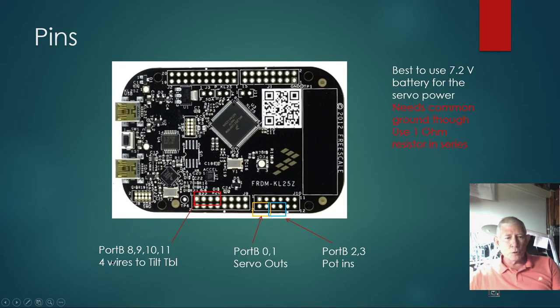The GPIO ports used are port B8, B9, B10, and B11. The two servo outputs are B10 and B1. The two A/D inputs are B2 and B3. We're using all B ports.